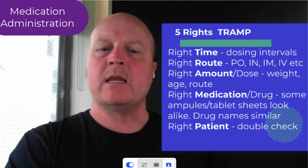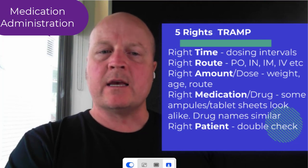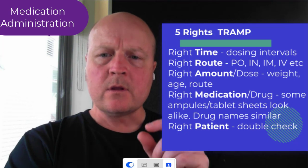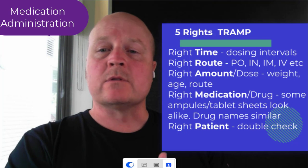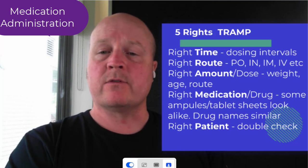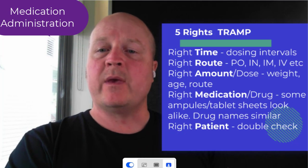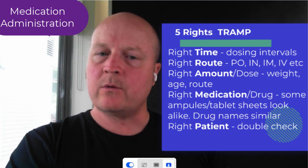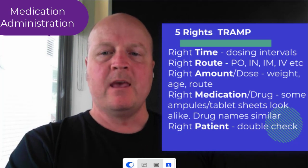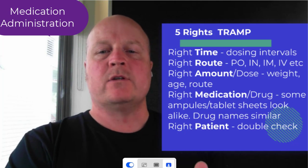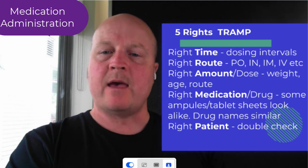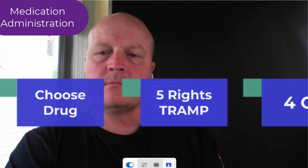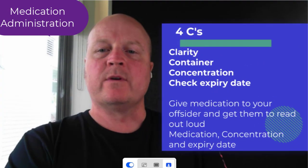Then the right medication — we want to make sure that we have what we think we've got. Some ampoules and tablet sheets look very similar between drugs, and some drug names can appear very similar, so we want to double check we've got the right medication. And then finally the right patient — double check we've got the right patient for that medication.